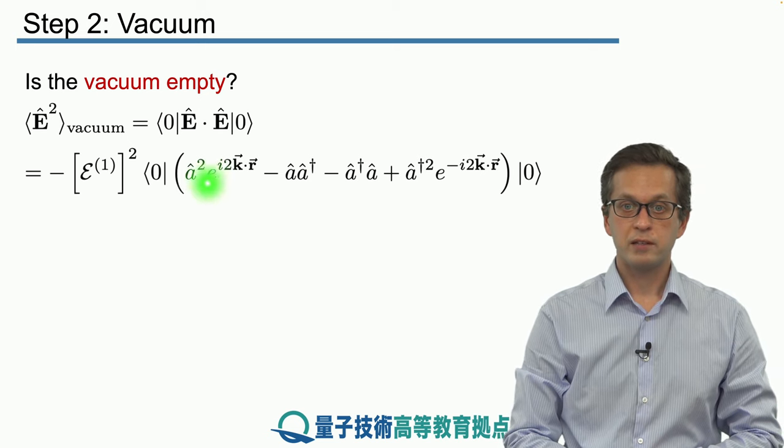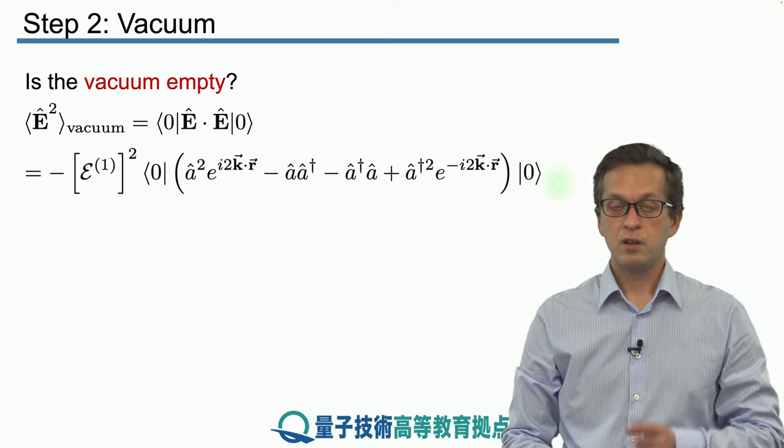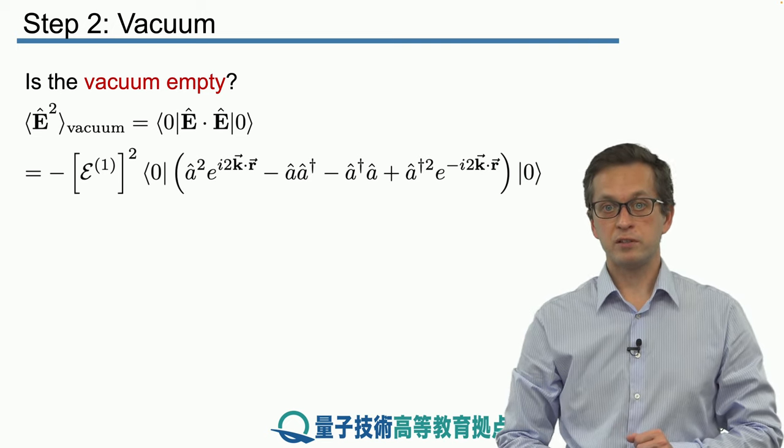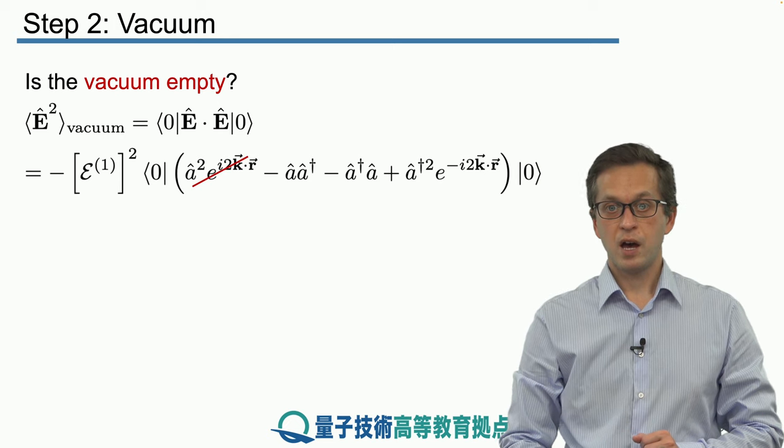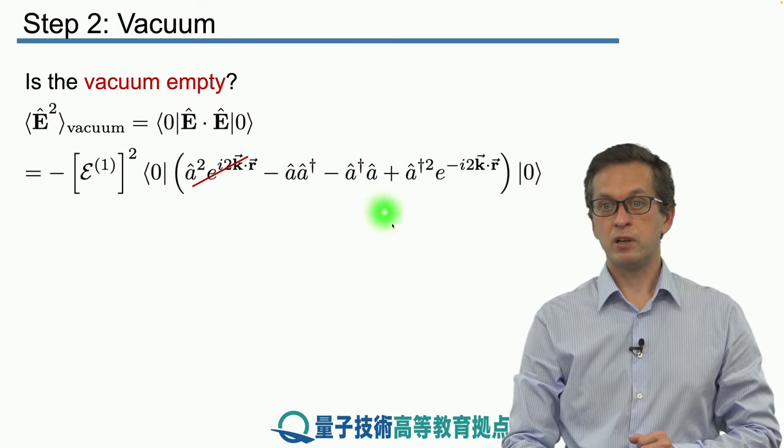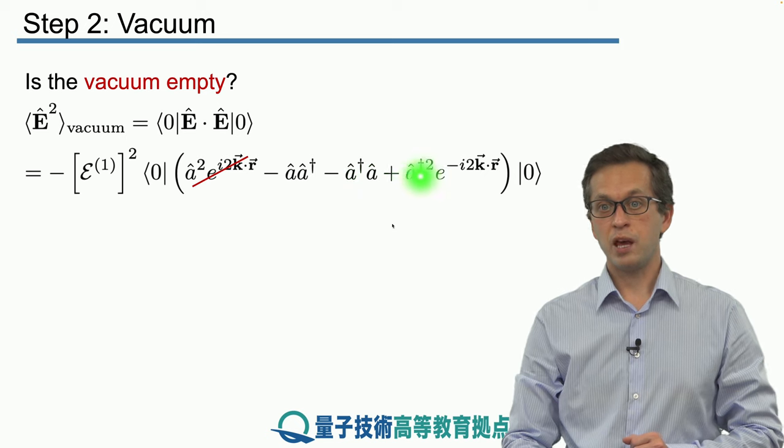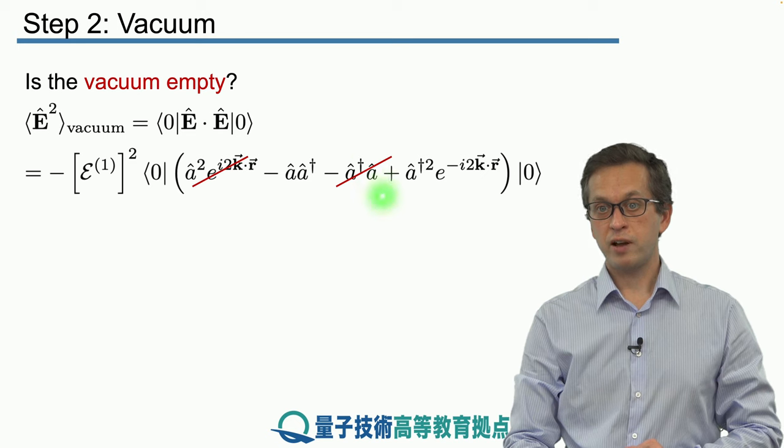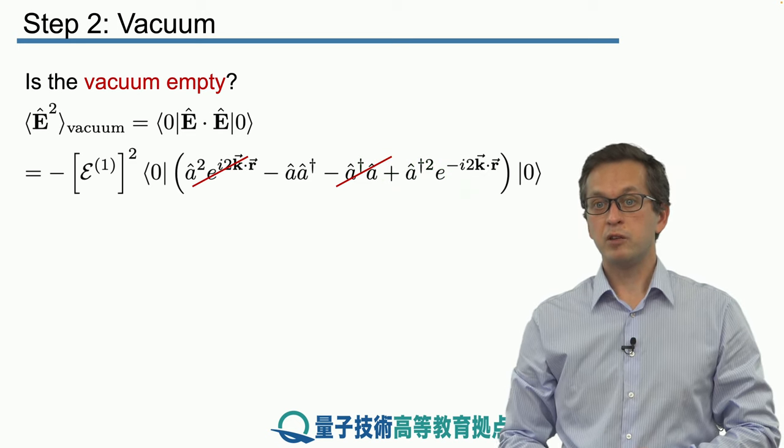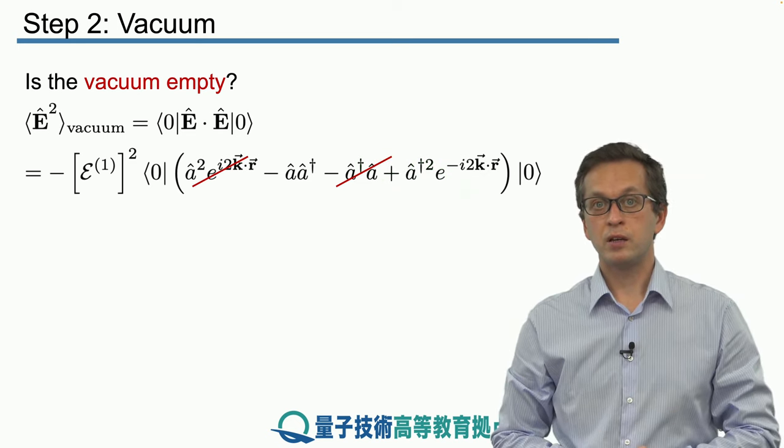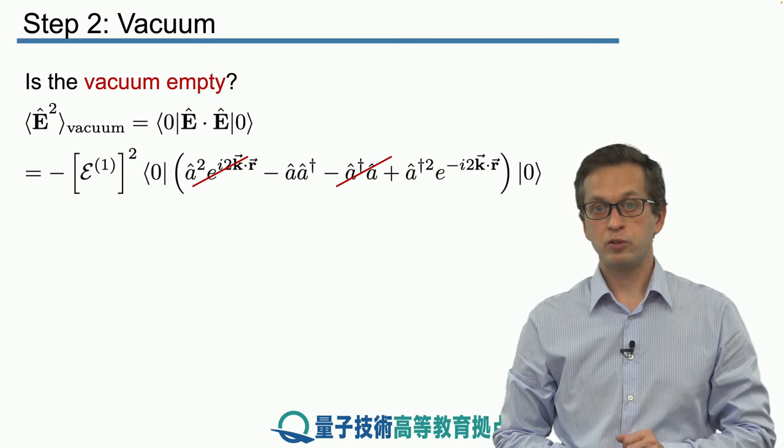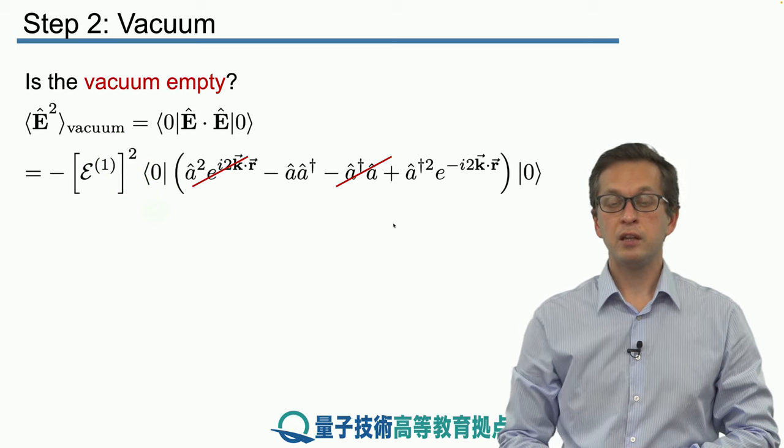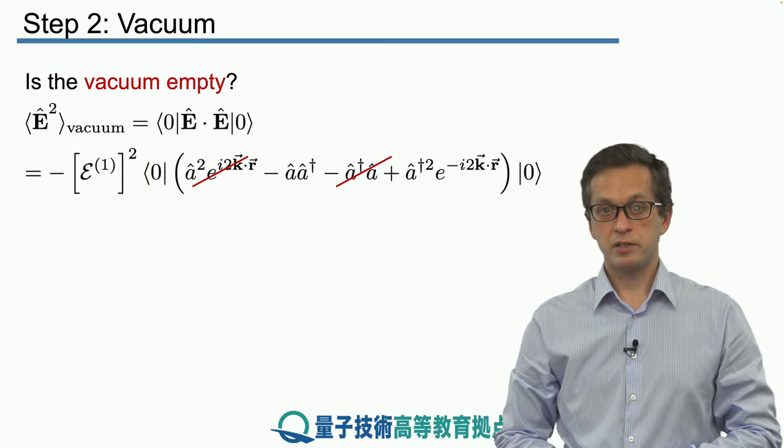So again, we follow the same strategy. Let's see how A squared acts on vacuum. Even applying the annihilation operator once destroys the vacuum, meaning the first term disappears. How about the third term? We see that A appears on the right as well, so applying A to zero also destroys that term. Now let's look at the final term, A dagger squared. That will bring us to number state two, which is orthogonal to the vacuum zero. So taking the inner product between them, the last term also disappears.